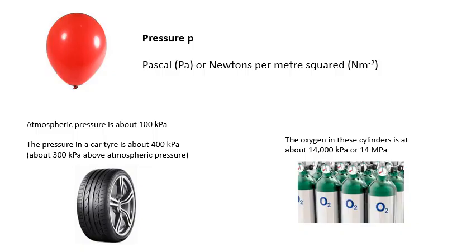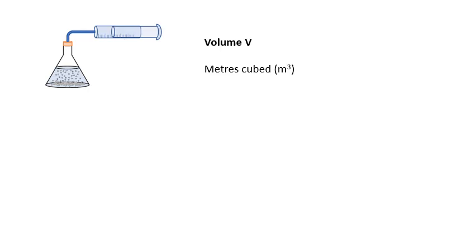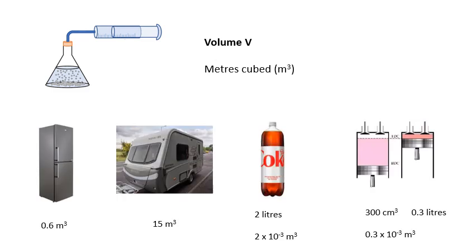Pressure must be measured in Pascals in all the calculations we'll use. Volume is measured in cubic meters. For example, inside this fridge it's about 0.6 meters cubed; this caravan has a volume of about 15 meters cubed. This bottle of Coke is 2 liters, so that is 2 times 10 to the minus 3 meters cubed, because there are 1,000 liters in a cubic meter.